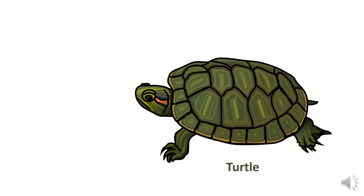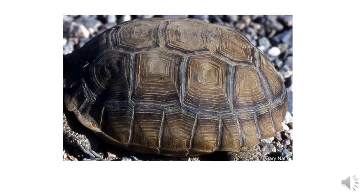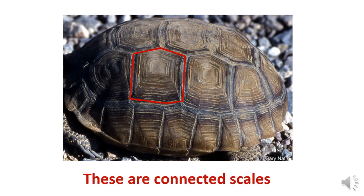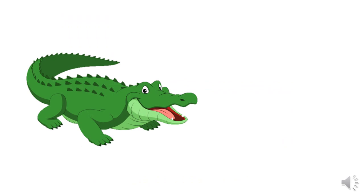Let's look together and see what reptiles have that other animals don't have. Let's start with the turtle — what do you see here? What does the turtle have? These on the shell of the turtle, we call scales. Now look at a real turtle — can you see the scales? Yes, these are the scales. They are connected to each other.